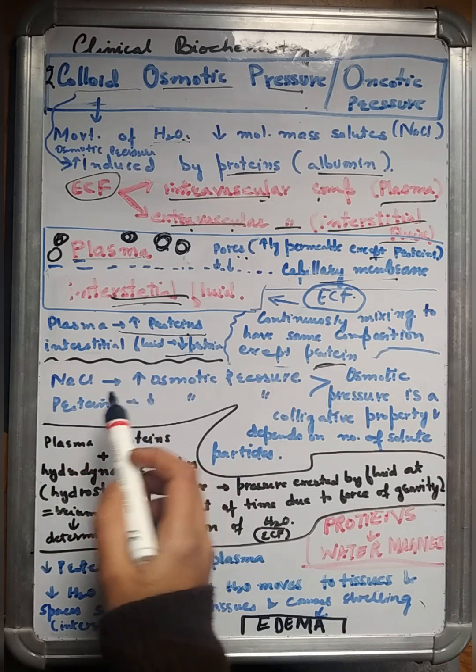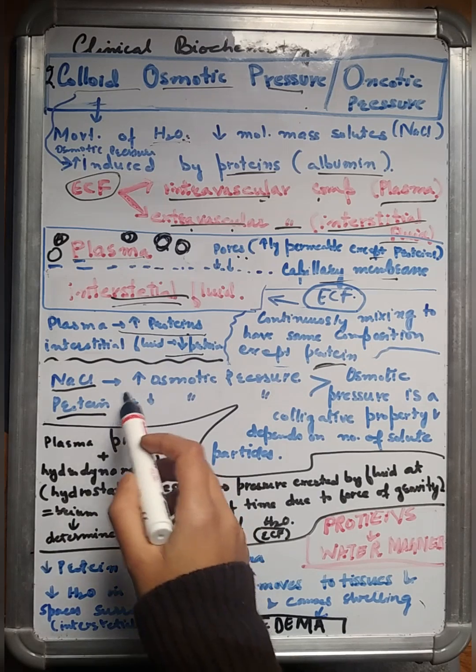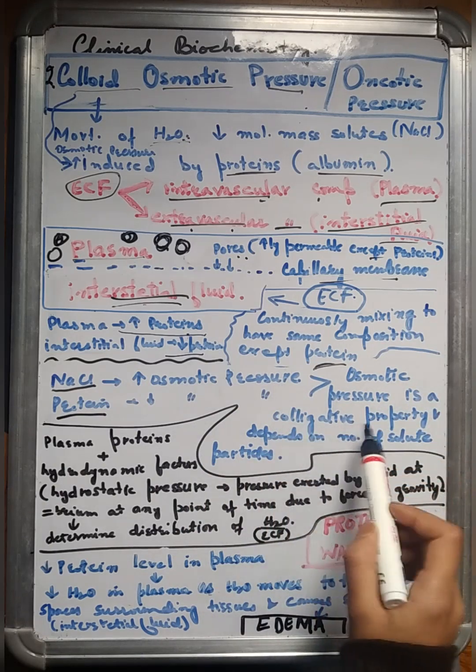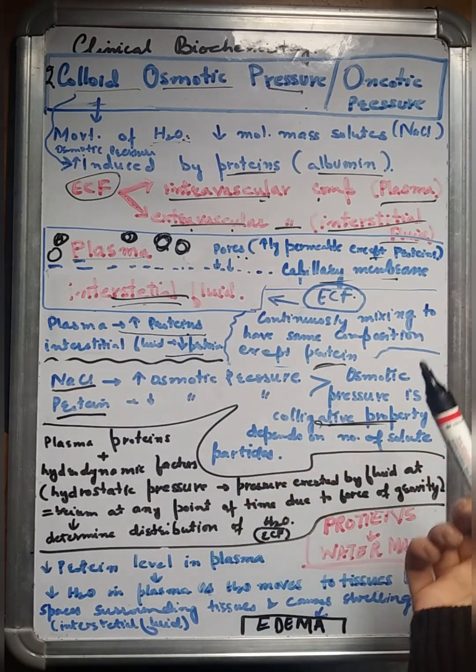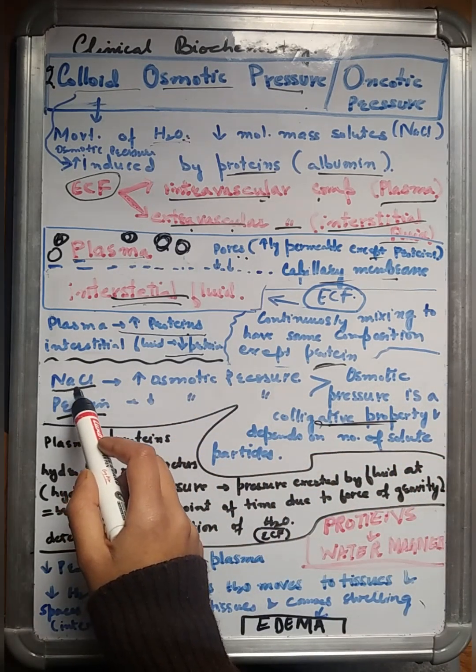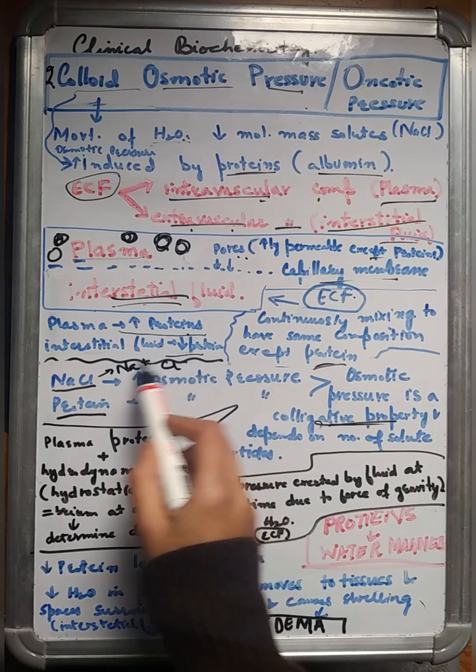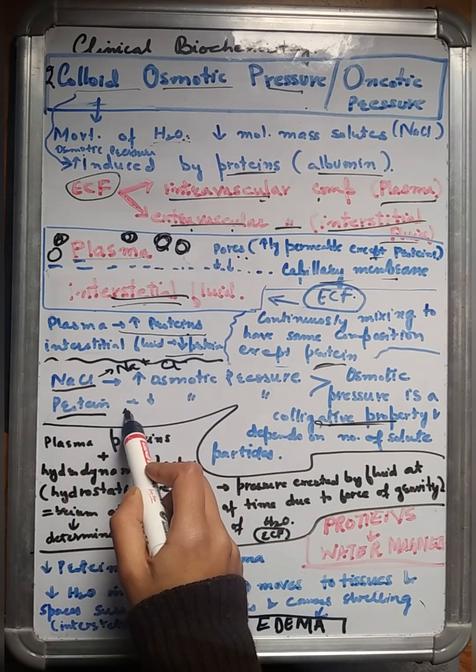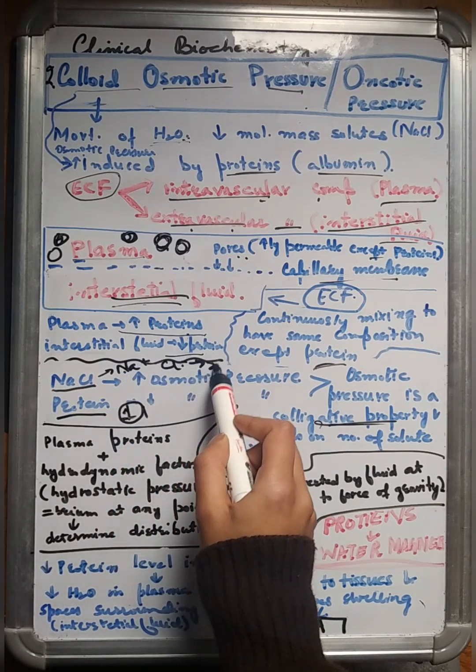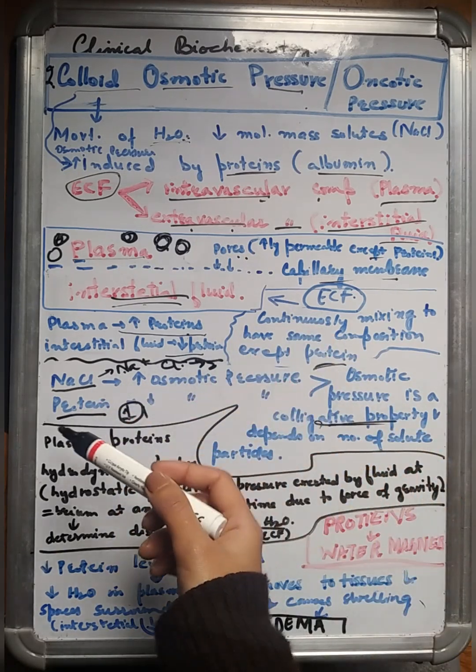Let's now see another comparison. If we have NaCl and we have protein, which one will exert more osmotic pressure? We know osmotic pressure is a colligative property. Colligative property depends on the number of particles, number of the solute particles. If we see NaCl, it's a salt and it will get dissociated into Na positive and Cl negative. Hence, these are two particles. But protein acts as an individual particle, only one in number. So NaCl will exert more osmotic pressure if we compare it with protein.